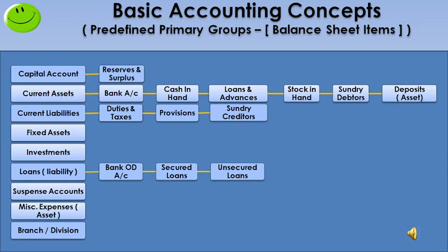Next, sundry creditors — sometimes we receive goods or services from our creditors on credit basis and payment is yet to be made. Next, fixed assets — it is a primary group. The company's own land, building, machinery, and furniture come under this group. Next, investment — it is also a primary group. Investment means income earned by depositing money in a bank or investing money in other company shares.